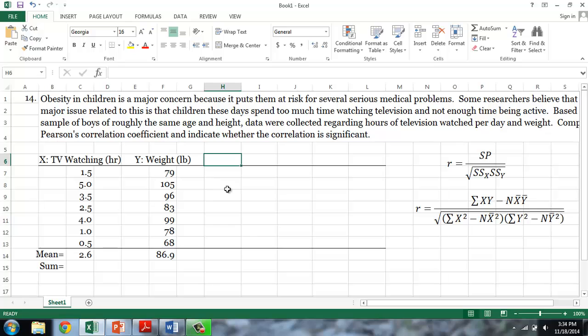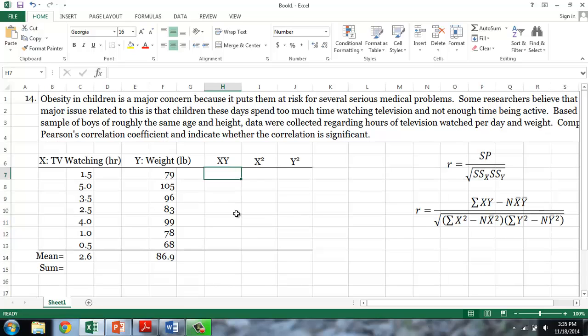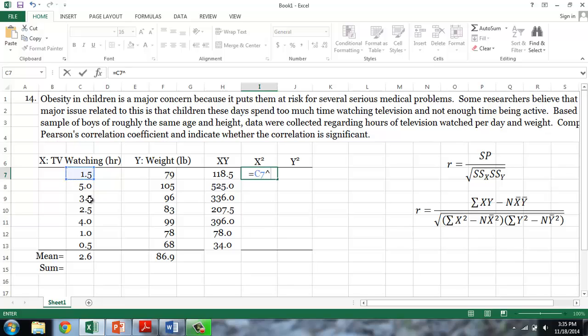So I'll create a column for each of those terms. And for the x times y column, I'll simply type equals the individual's x, or hours spent watching television, times their weight, or y. And copy that into the remaining cells. For squared x's, I'll simply take the individual's x and square it. And do the same for y equals the individual weight squared.